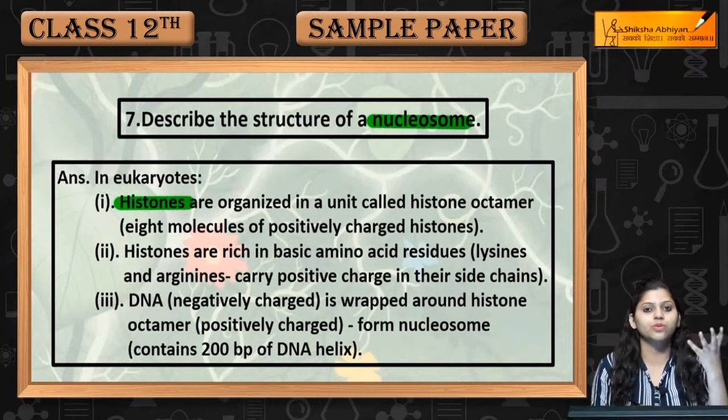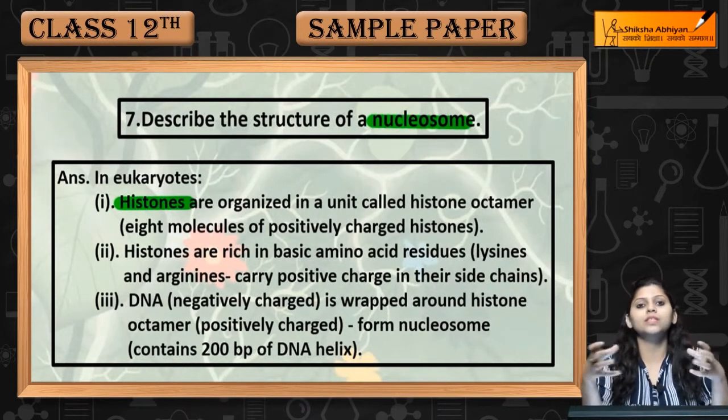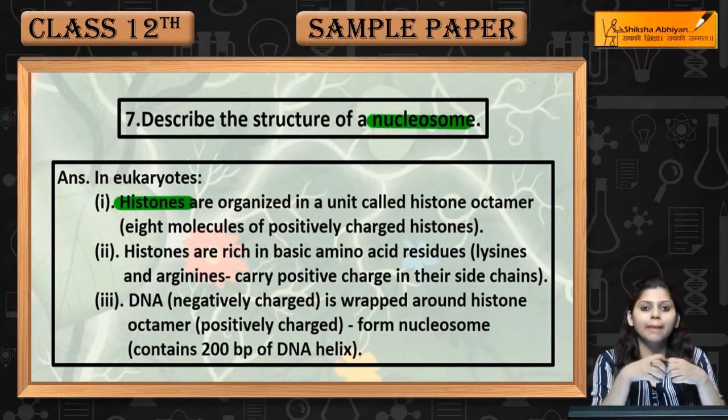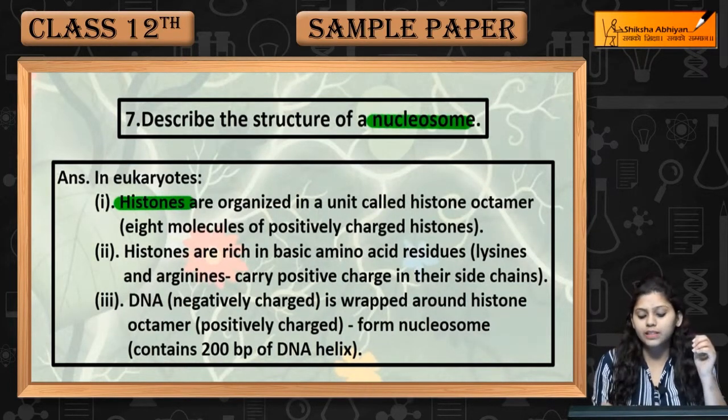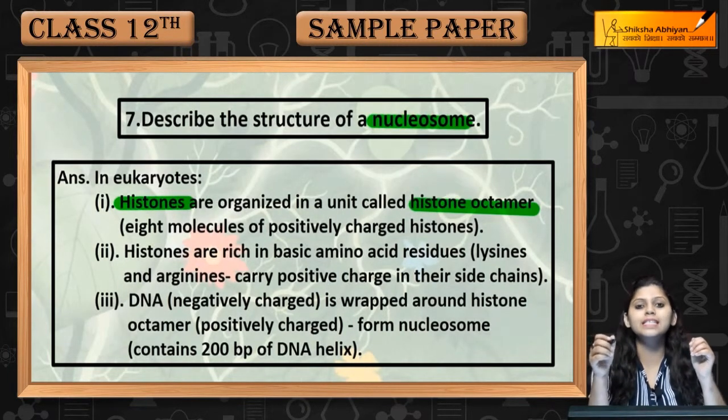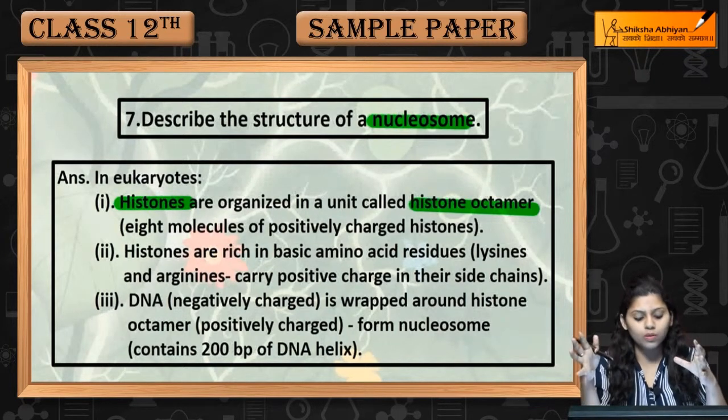Histones, histone proteins hoti hai. Jo kis form mein available hai? Bohut sari histone proteins, mainly eight histone proteins combine karti hai, ek structure banati hai, jise histone octamer bolte hai. Octa is eight. So eight histone proteins histone octamer banati hai.